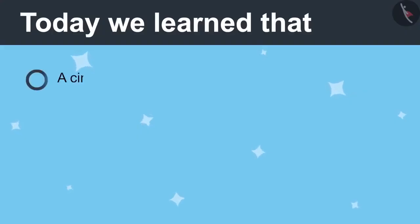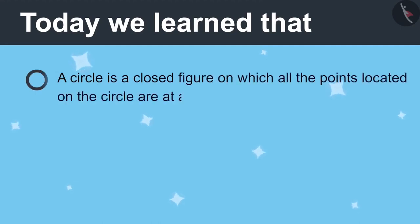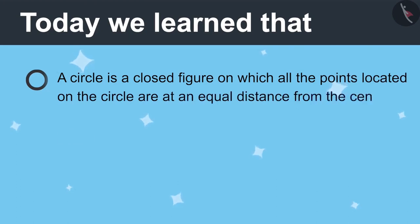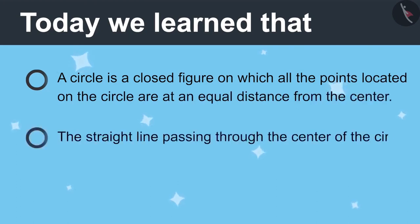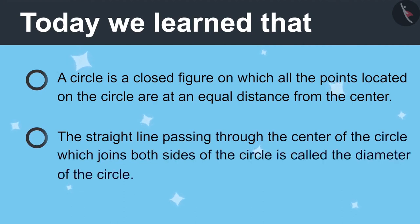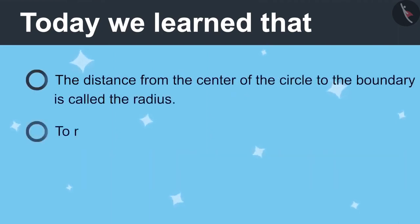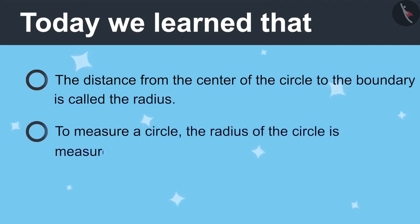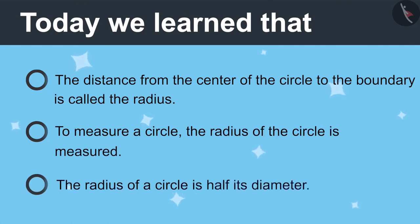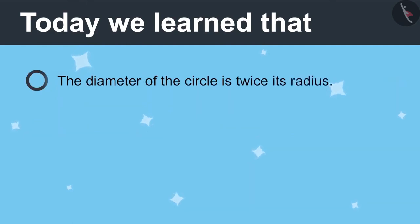Today we learned: a circle is a closed figure in which all the points are at the same distance from the centre. The straight line passing through the centre of the circle which meets both sides is called the diameter. The distance from the centre to the boundary is called radius. To measure a circle, the radius is measured. The radius of a circle is half its diameter, and the diameter is twice its radius.